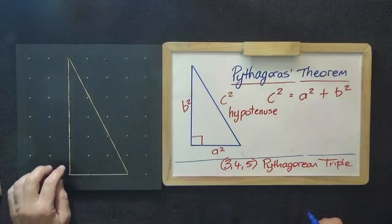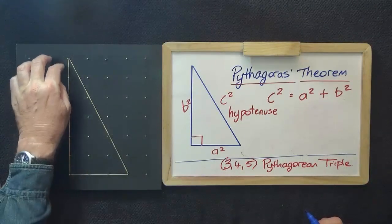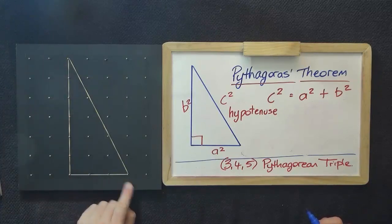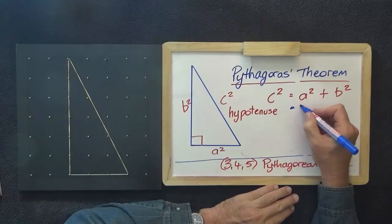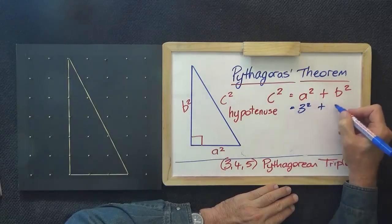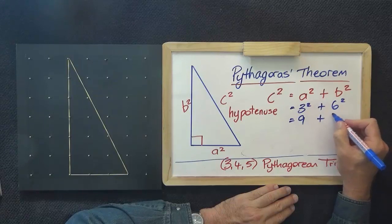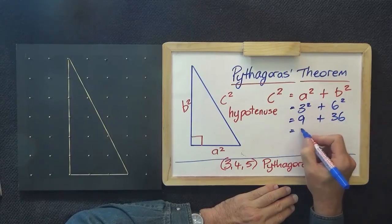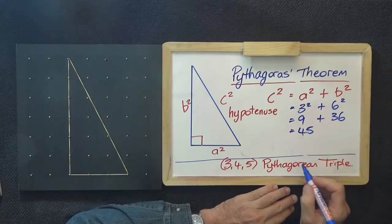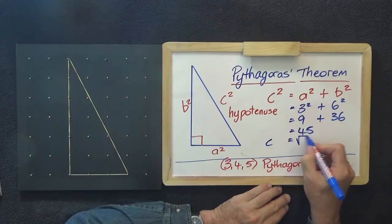We have a triangle now that is 1, 2, 3, 4, 5, 6 high and 3 again along the base. So that will be 3 squared plus 6 squared which is 9 plus 36 equals 45. So C is the square root of 45.